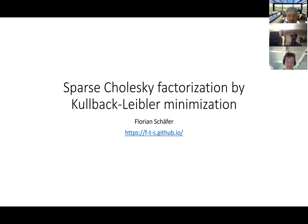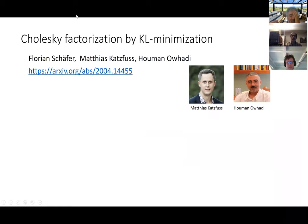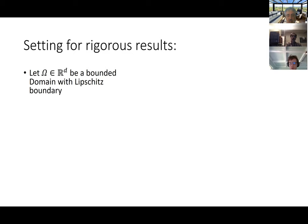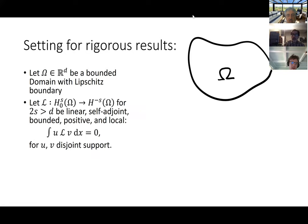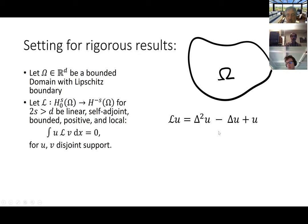Hello everyone, thanks for listening. I'm going to talk about sparse Cholesky factorization by Kullback-Leibler minimization, which is joint work with Matthias Katzfuss at Texas A&M University and Houman Owhadi at Caltech. I'll start by laying out the setting for our rigorous results. We assume we're given a domain omega in R^d with a Lipschitz boundary, and L mapping the Sobolev space H^s of s-differentiable functions to its dual — really you should think of an elliptic partial differential operator.